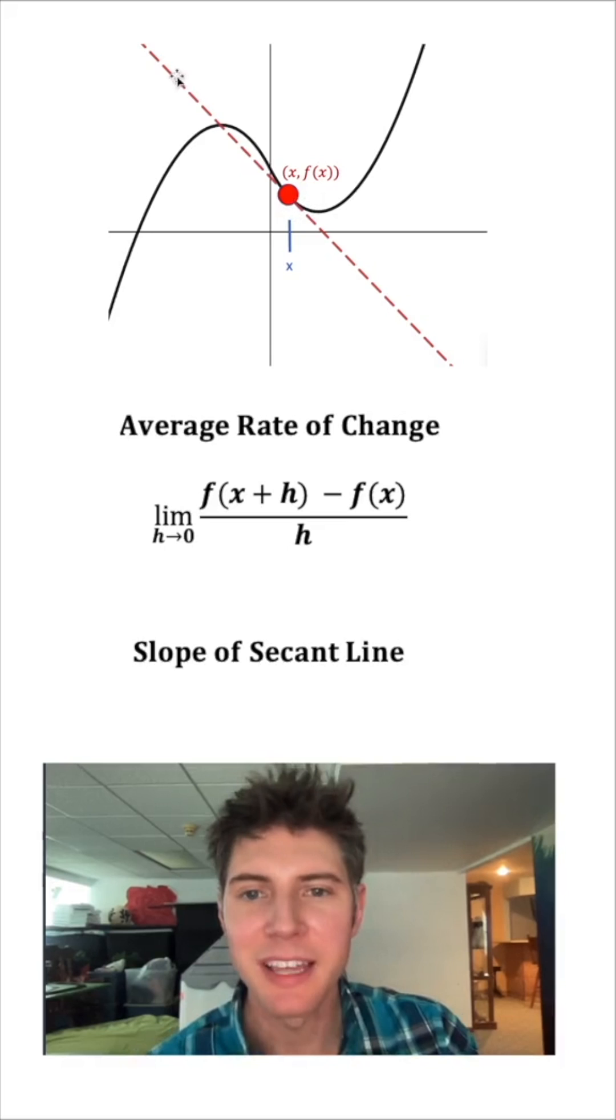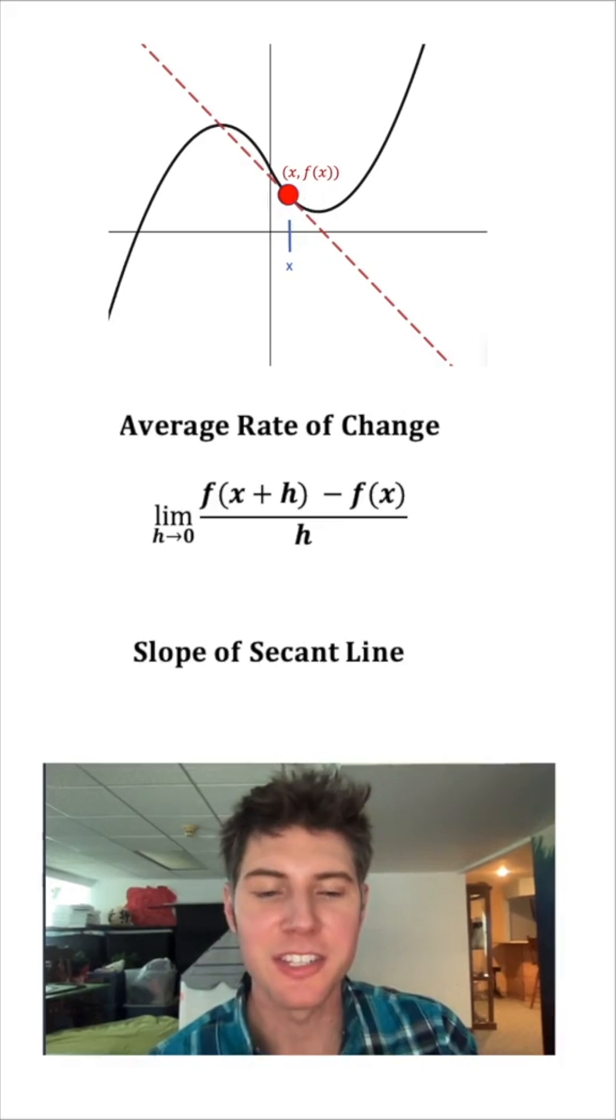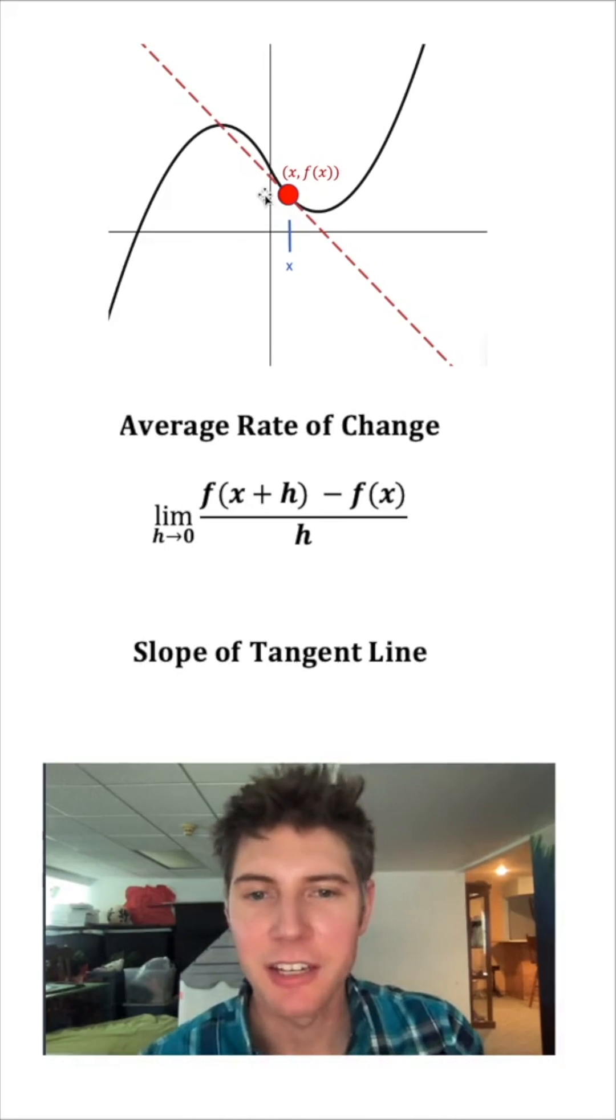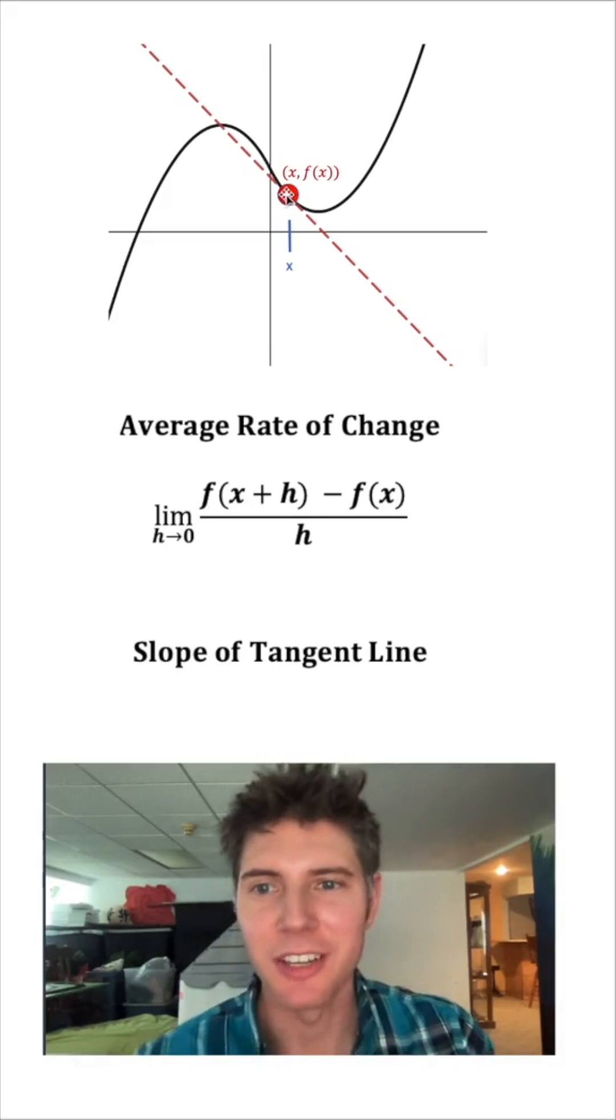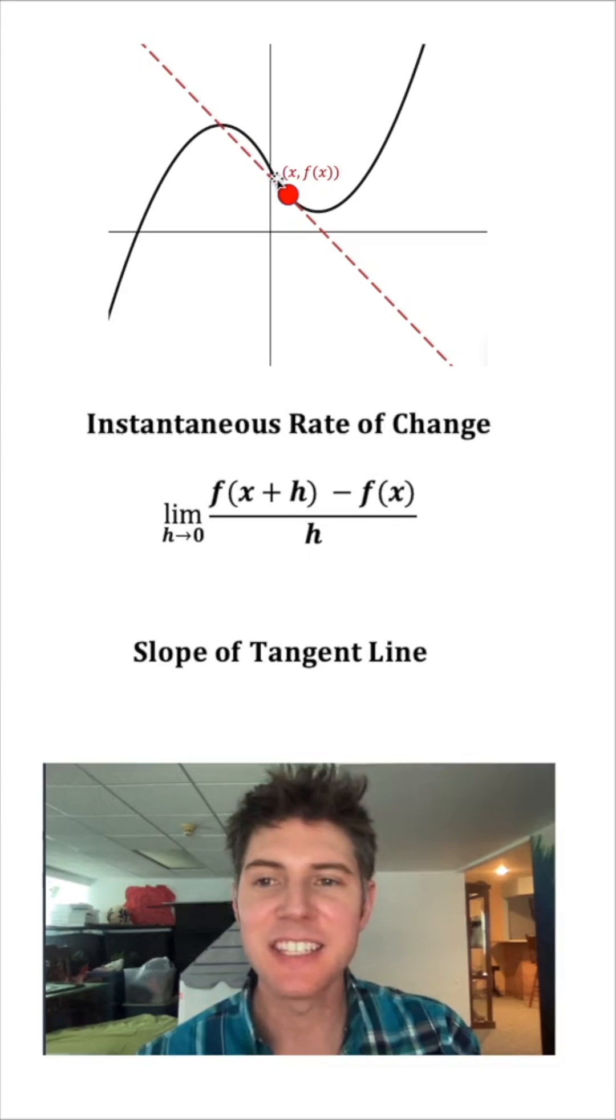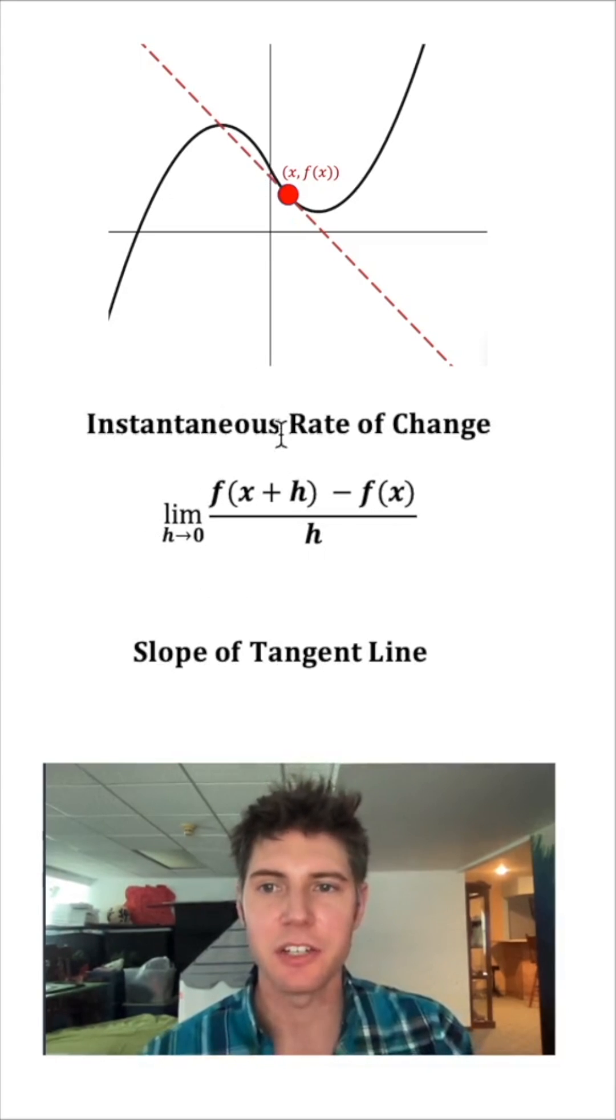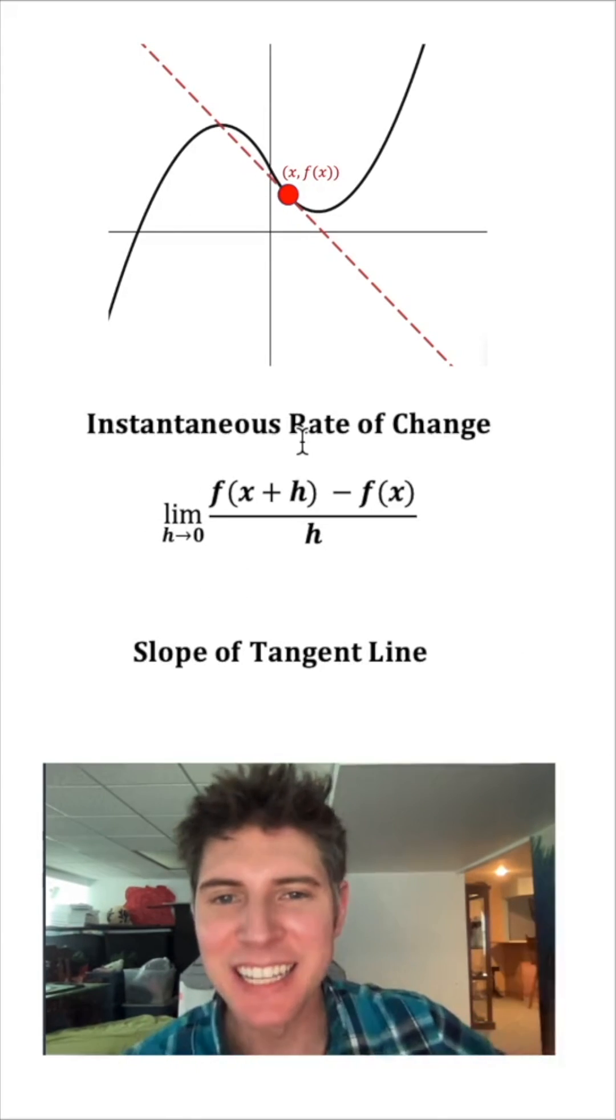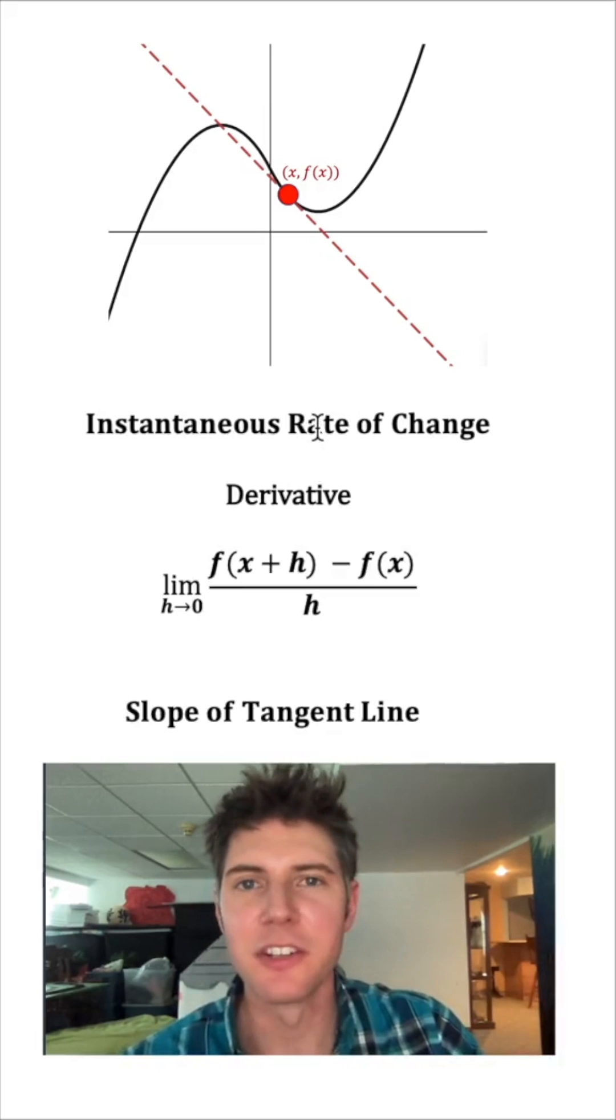And now that we're here at h equals 0, that means there's only one point. But this line is no longer called a secant line. It's called a tangent line. And this point is called the point of tangency. So this is no longer an average rate of change because there's no two points for it to be an average for. This is an instantaneous rate of change. It's how fast it's changing at that instant. Another name we have for this is the derivative.